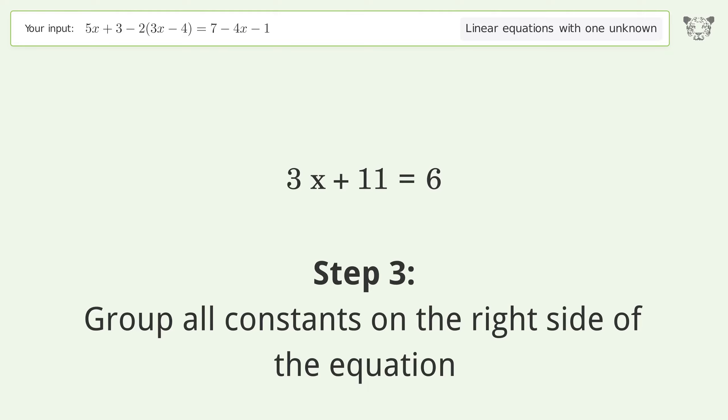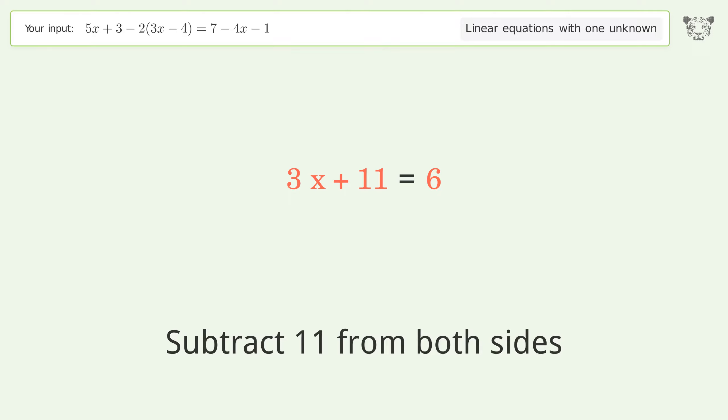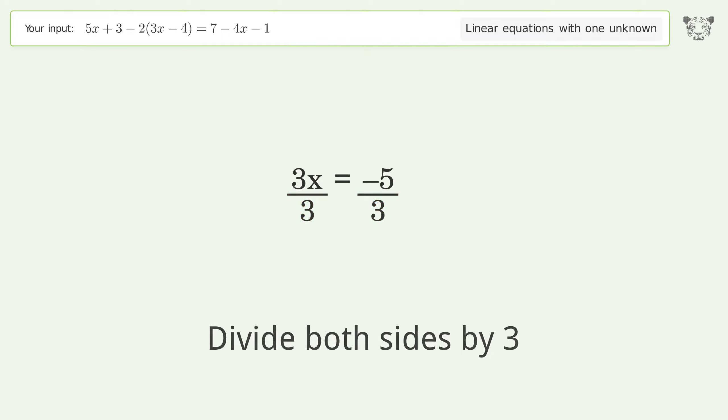Group all constants on the right side of the equation. Subtract 11 from both sides. And so the final result is x equals negative 5 over 3.